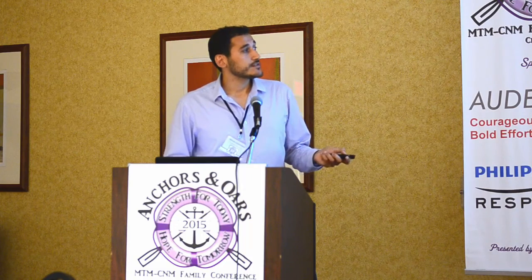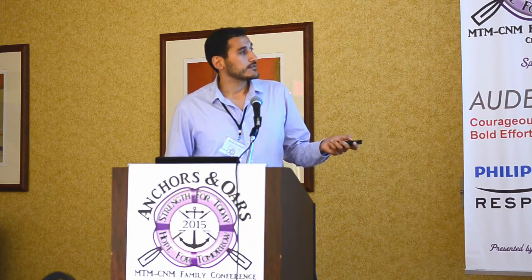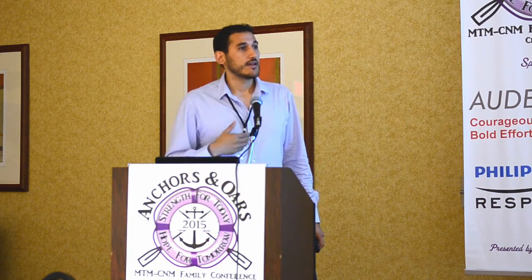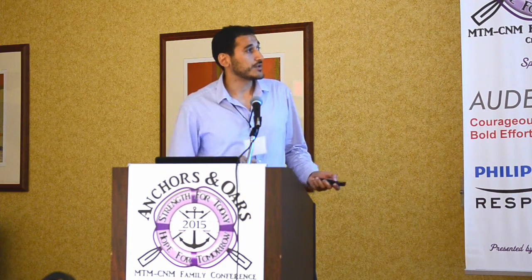Other symptoms involving other organs include liver, heart, and kidney. Patients also have bleeding disorders and anesthesia-related complications. For the liver, we usually find an enlarged liver and increased liver enzymes. Regarding the heart, although 29% of MTM patients show cardiac findings, only one patient actually had primary cardiomyopathy. All other patients had secondary cardiac complications due to respiratory infections or other complications.